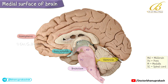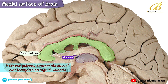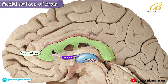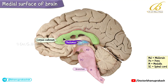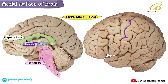Our attention first focuses on the corpus callosum, neatly divided by the section, creating a pathway between the thalamus of each hemisphere through the third ventricle. This section also traverses the entire expanse of the brainstem. Prominently, we note the central sulcus of Rolando, not as deeply engraved as on the supralateral surface, but certainly visible on this medial aspect.